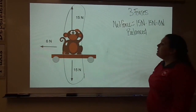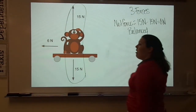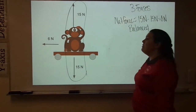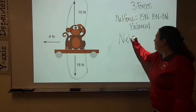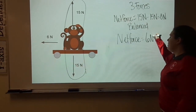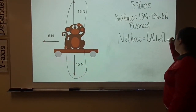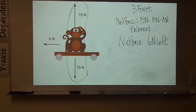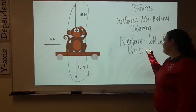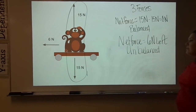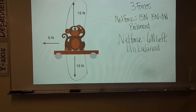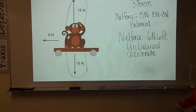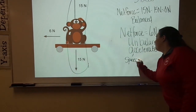Now we're going to look at our final force: 6 newtons going to the left. It's the only force acting on the object in the left-right direction, so we can say that our net force is 6 newtons left. Whenever we have a net force that is not 0, we know that the force is unbalanced, which means it will accelerate — changing in speed or direction.